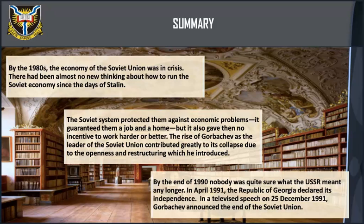The Soviet system protected people against economic problems — it guaranteed them a job and a home — but gave them no incentive to work harder or better. The rise of Gorbachev contributed greatly to the USSR's collapse due to the openness and restructuring he introduced. By the end of 1990 nobody was quite sure what the USSR meant any longer. In April 1991 the Republic of Georgia declared its independence, and on 25 December 1991 Gorbachev announced the end of the Soviet Union.